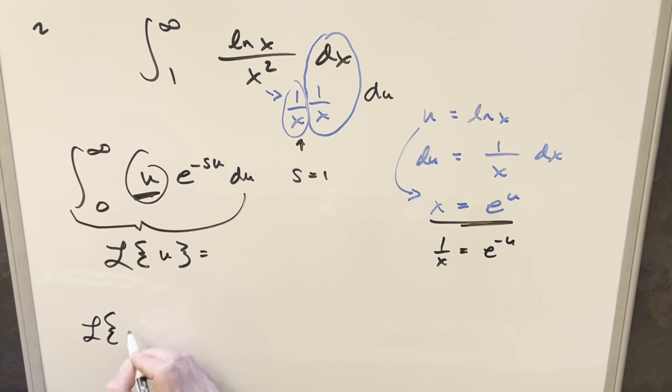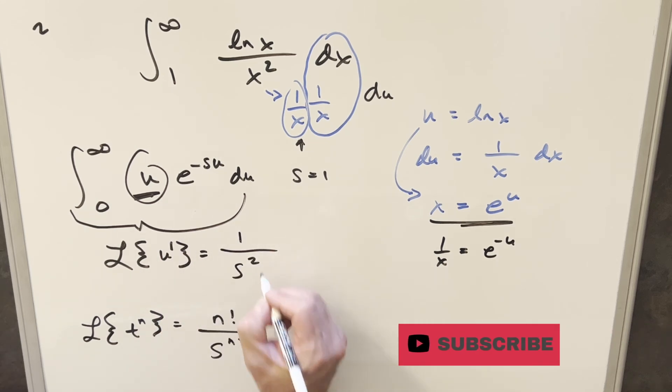So our general form for this, if we have something like using a different variable t, if we want the Laplace transform of t to the n, our formula is n factorial over s to the n plus 1. So here in our u, the coefficient is just 1, so n factorial, 1 factorial is just 1. And then for this, we're going to have s to the 1 plus 1 or 2.